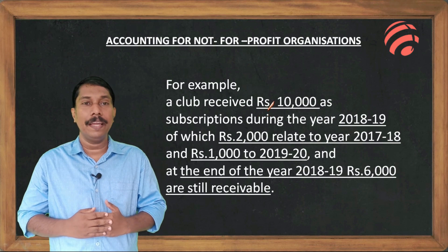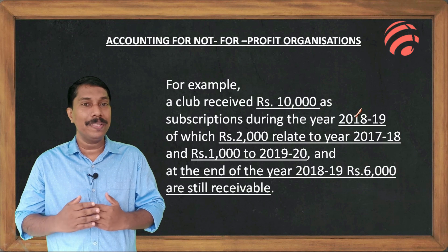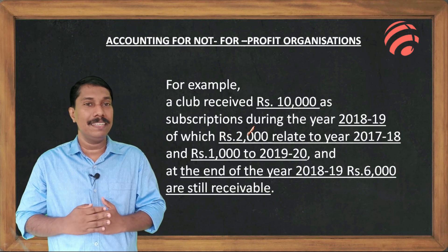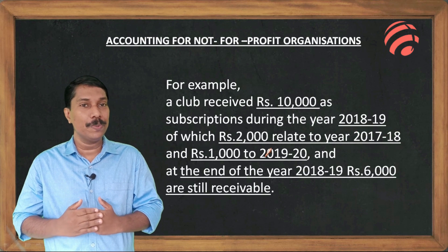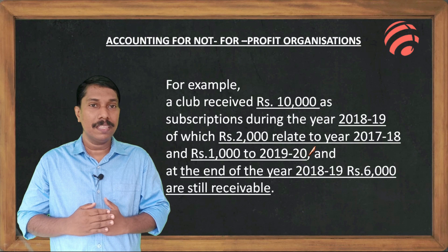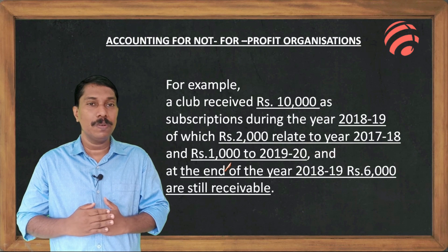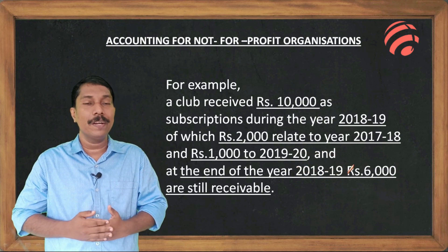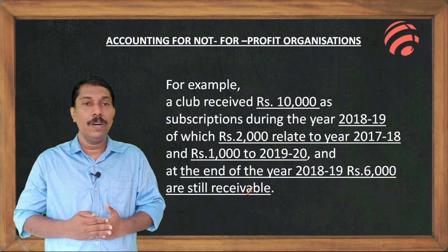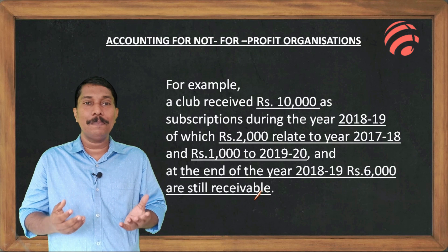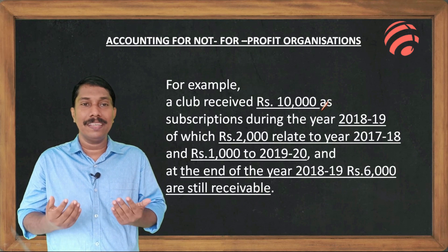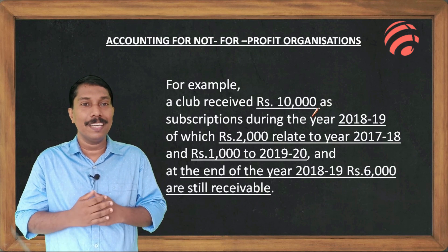Consider a subscription problem for the year 2018-19, of which rupees 2,000 are related to 2017-18, and rupees 1,000 are related to 2019-20. At the end of the year 2018-19, rupees 6,000 are still receivable.